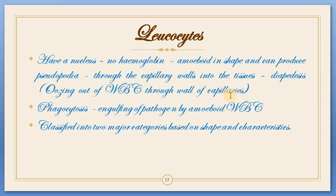When the WBC goes out, it develops pseudopodia, engulfs the pathogen, and the pathogen gets completely digested by the WBC cell. That process is known as phagocytosis. The literal meaning of phagocytosis is 'cell eating' — the WBC cell eats the pathogen. These are the two processes — diapedesis and phagocytosis — by which WBC attains the function of providing immunity.